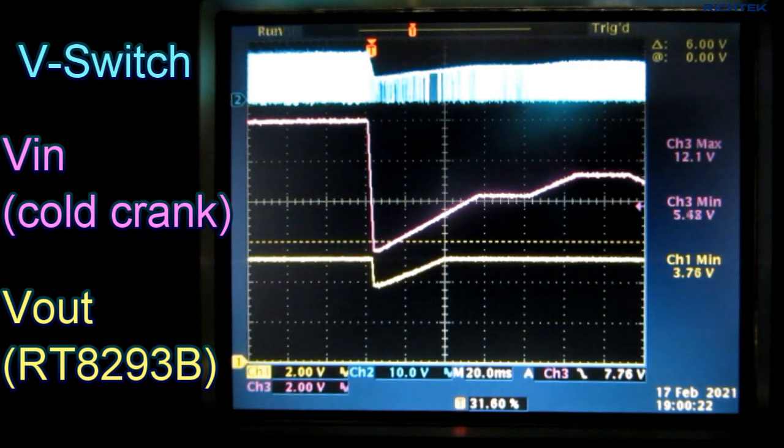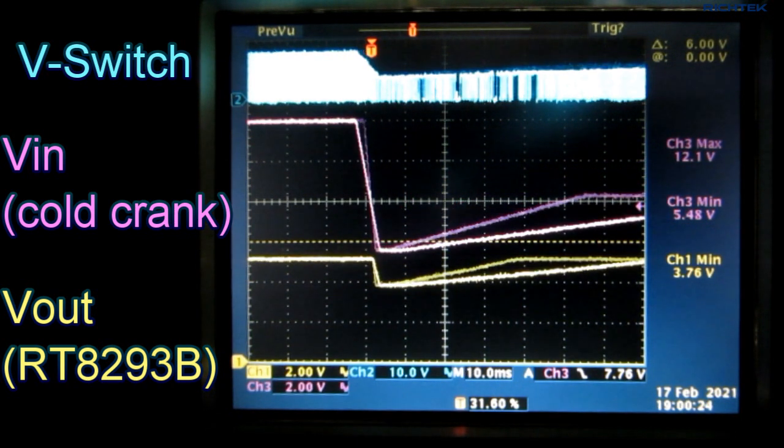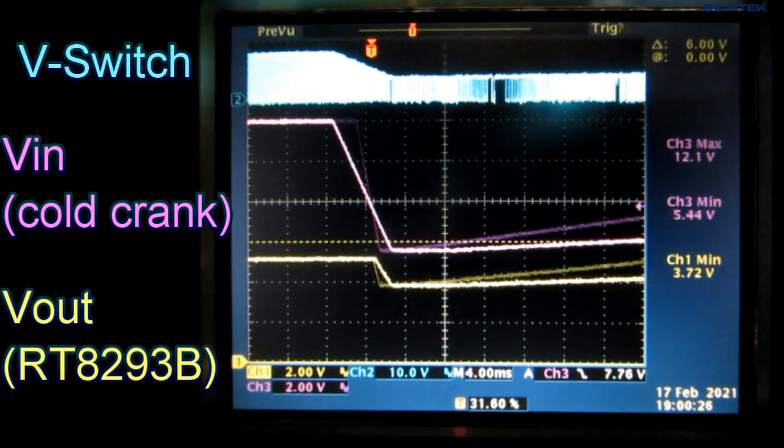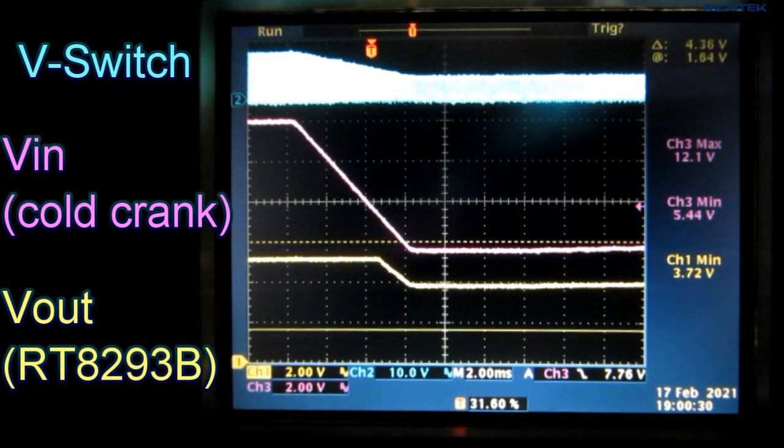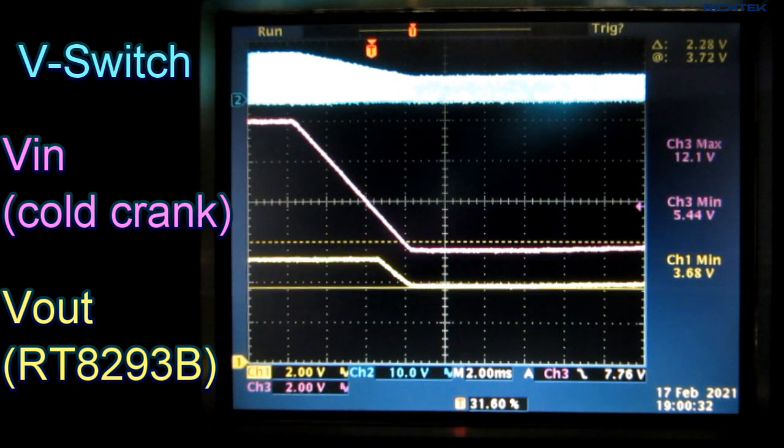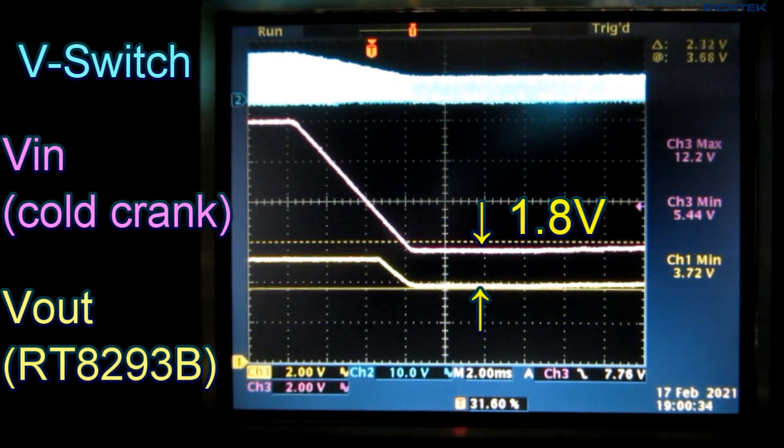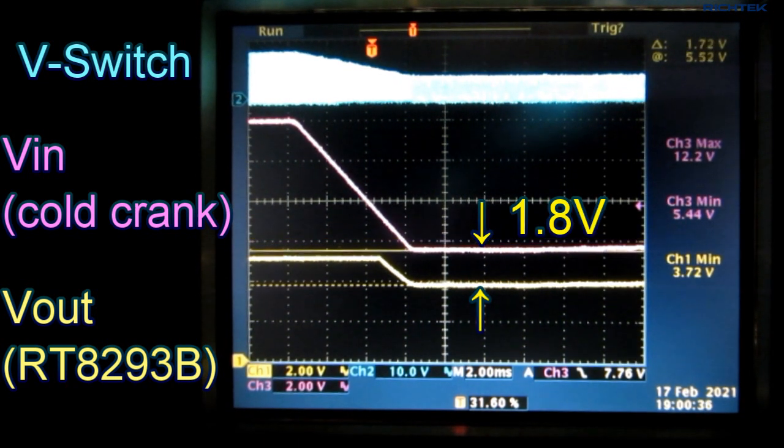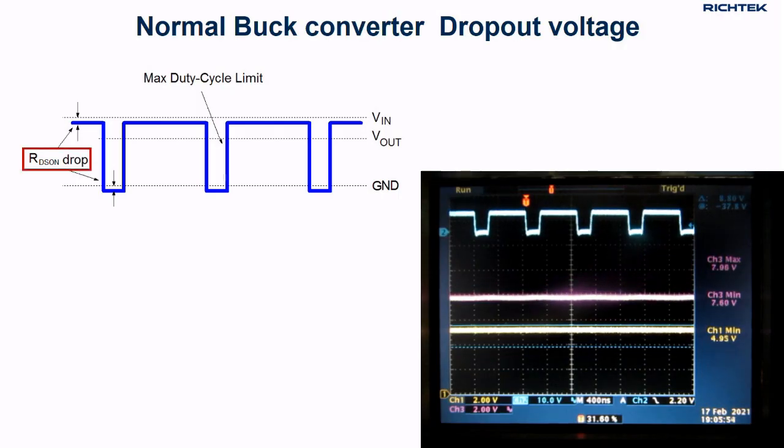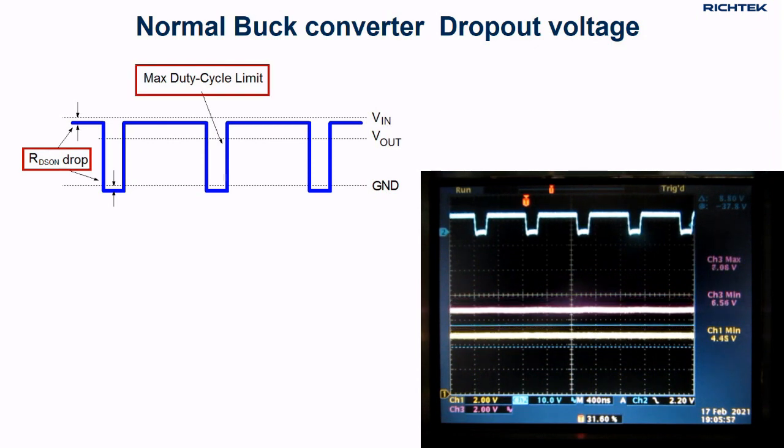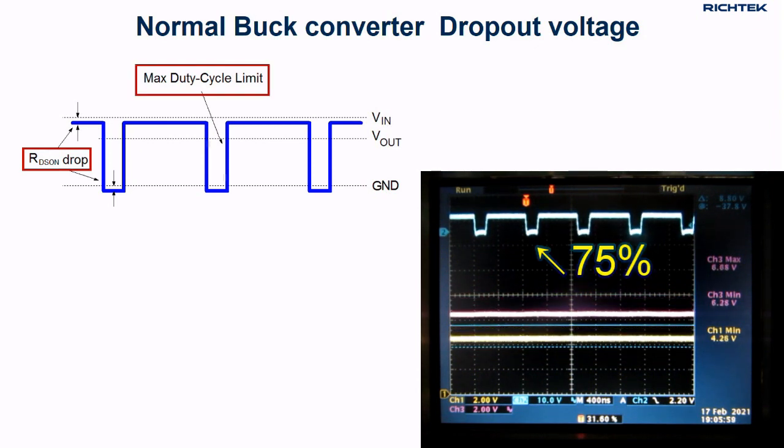Let's zoom in to the voltage dip. Here you can see that when the input voltage drops to 5.5V, the output voltage has dropped from 5V down to 3.7V. So there is around 1.8V dropout between the buck converter input and output voltage. This is caused by the RDS on voltage drop and the maximum duty cycle limit of this high-frequency buck converter, which is around 75%.